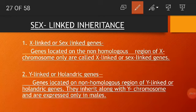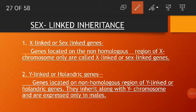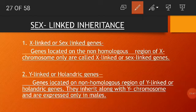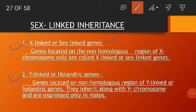In sex-linked inheritance, there are two types. Genes located on the non-homologous region of the X chromosome are called sex-linked genes, and the traits determined by them are called sex-linked traits. The inheritance of sex-linked genes from parents to their children is called sex-linked inheritance. The two types are X-linked genes, also called sex-linked genes, and Y-linked genes, also called holandric genes.